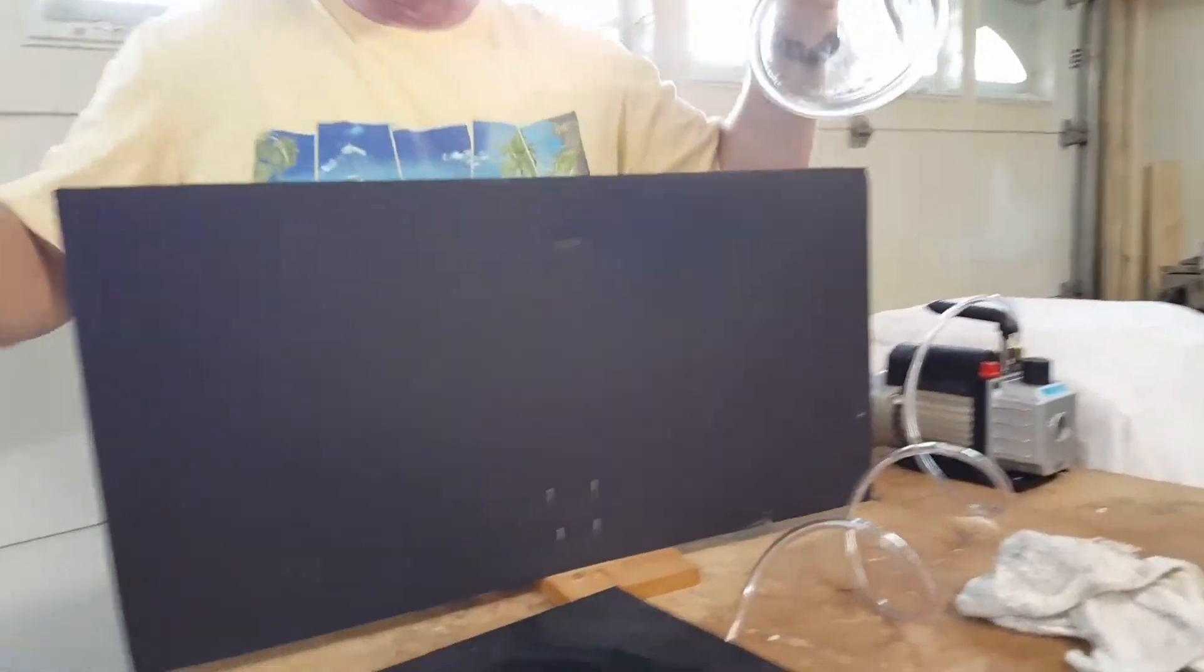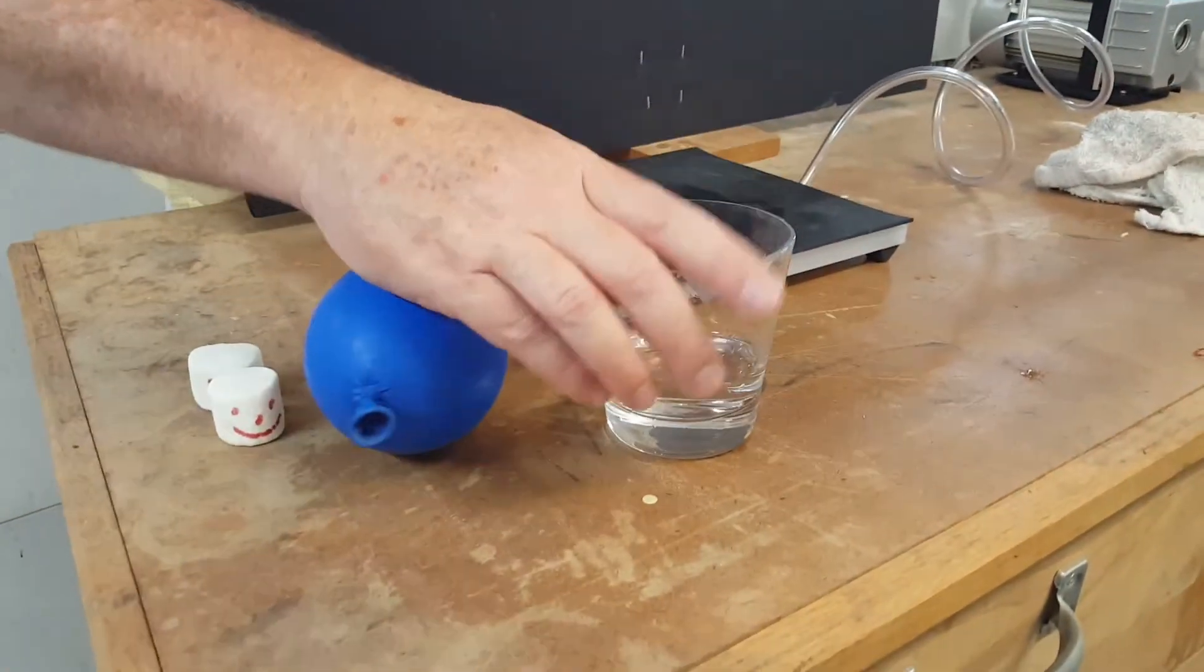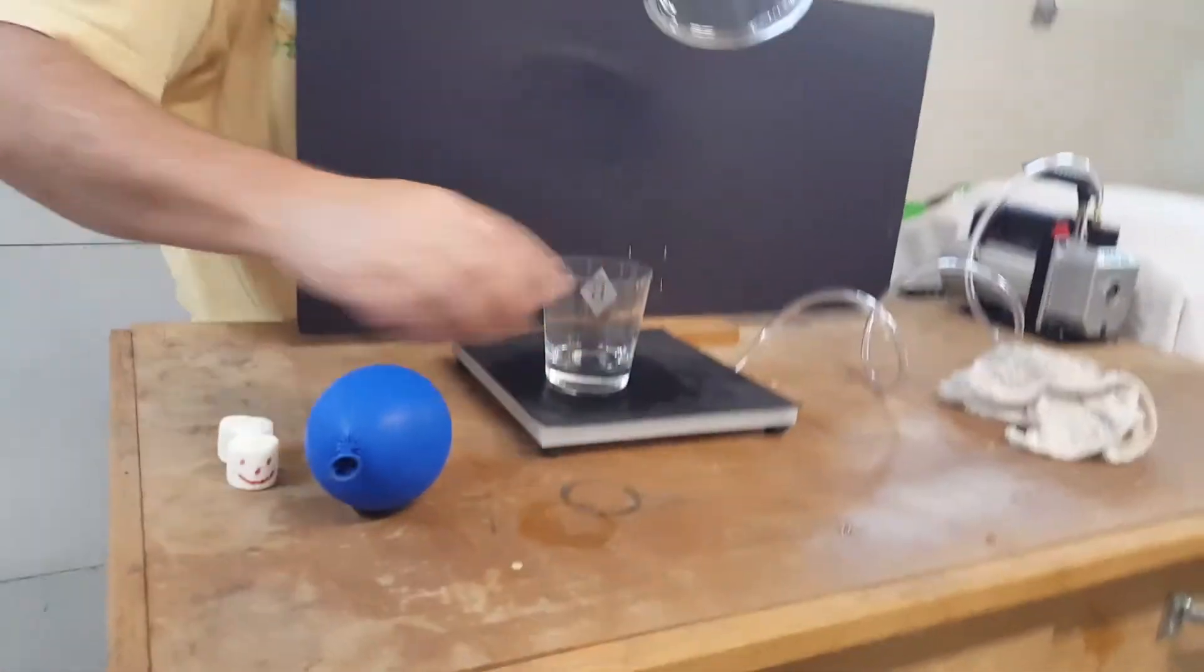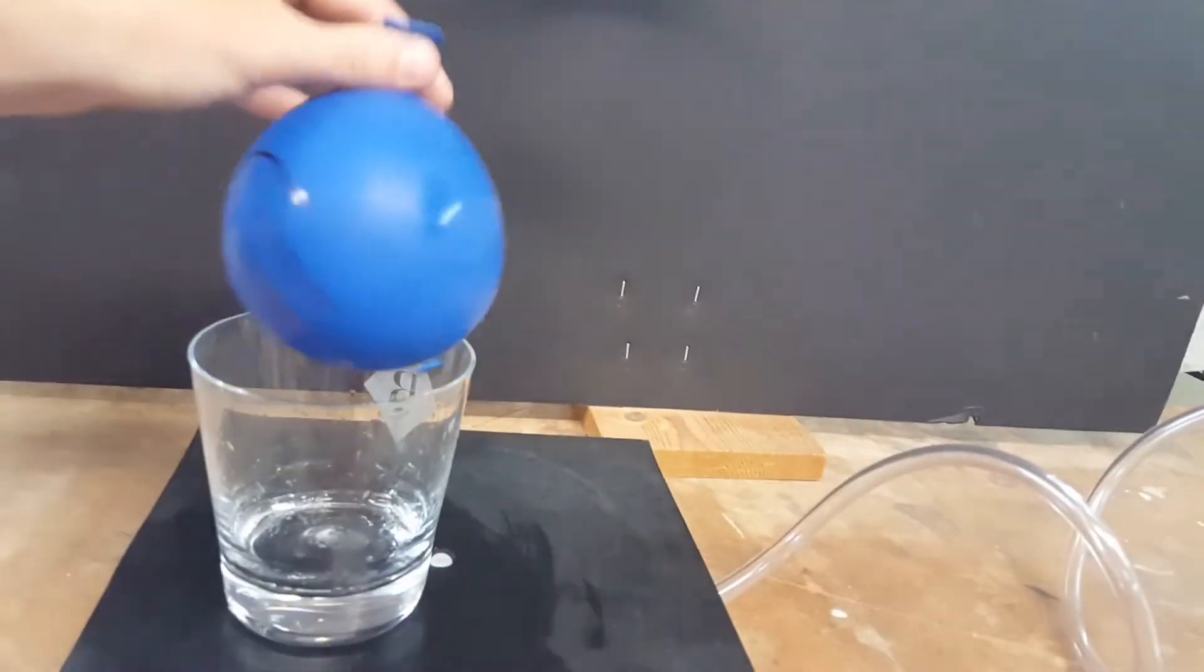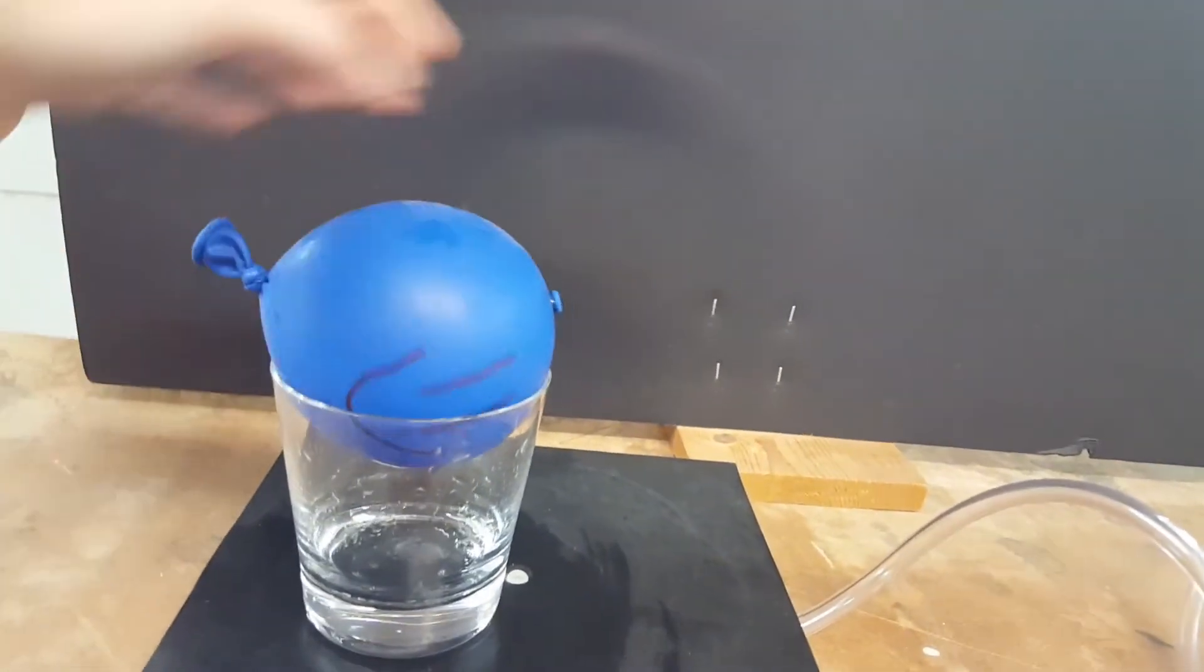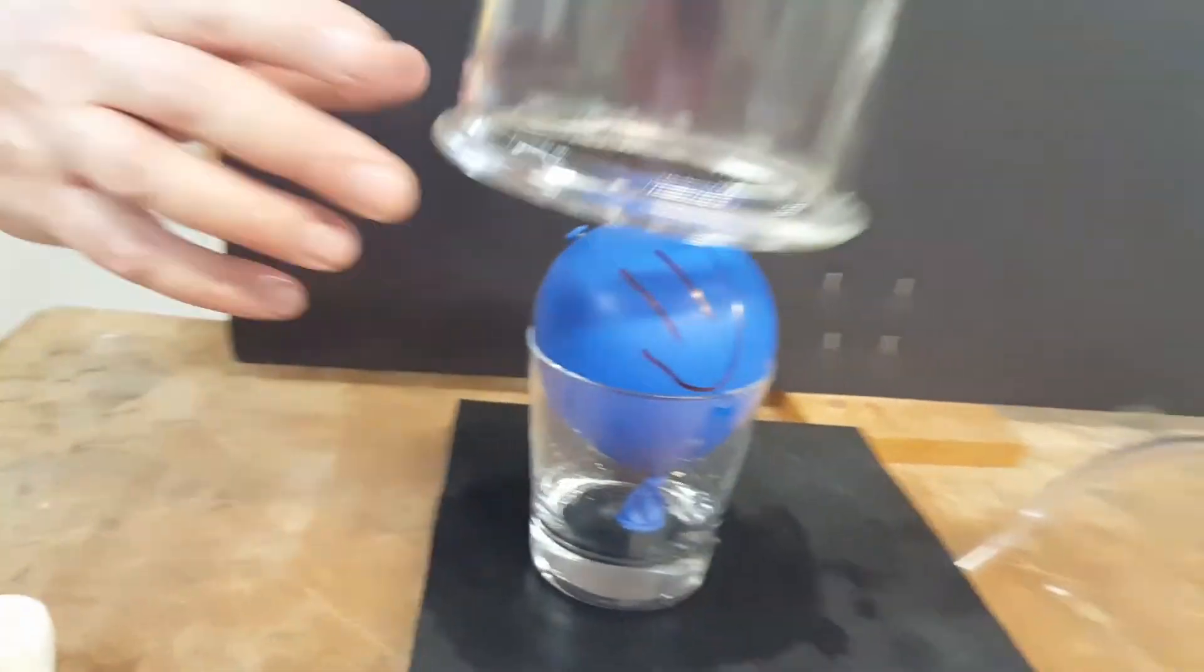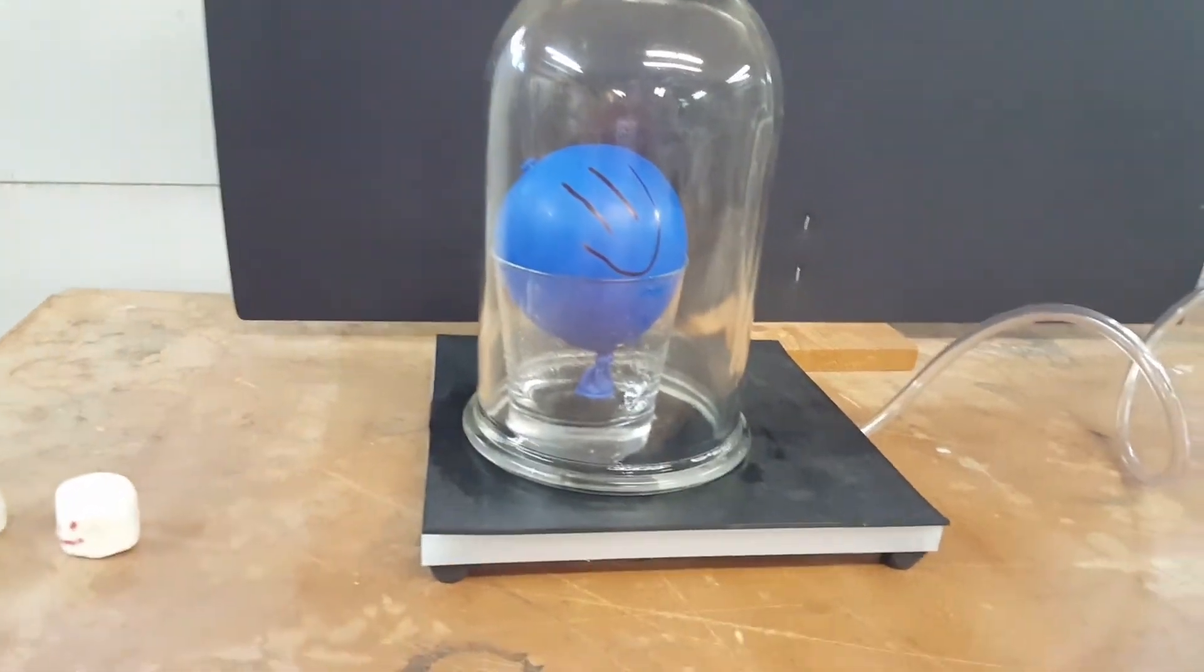So now we're going to see. And this is a classic. I think everybody does this one at one point or another. We don't need this water anymore. So safely dispose of it. But I will use this to support this little balloon. We've got to adjust it so the smiley face shows. There we go. So let's see what happens to this balloon when we remove the pressure.